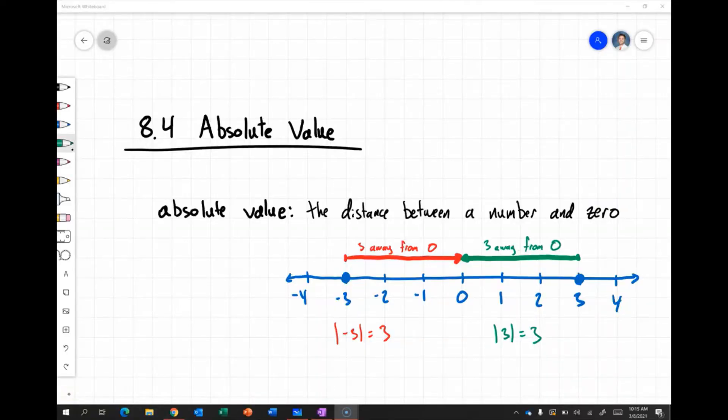Let's take a quick look at absolute value. Absolute value is simply the distance between a number and zero.